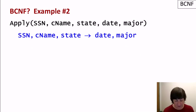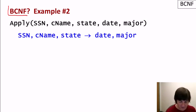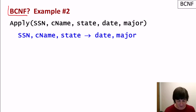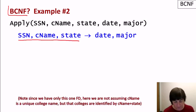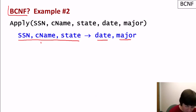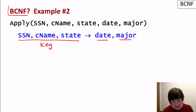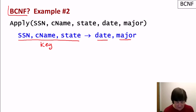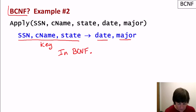Now let's look at the apply relation with attributes SSN, college, state, date, and major, and one functional dependency: SSN, college → date, major. This says each student may apply to each college only once and for one major. The three attributes SSN, college form a key because they determine all other attributes. Our only functional dependency has a key on its left-hand side, so the apply relation is already in Boyce-Codd normal form.